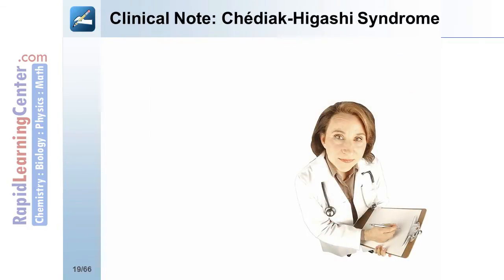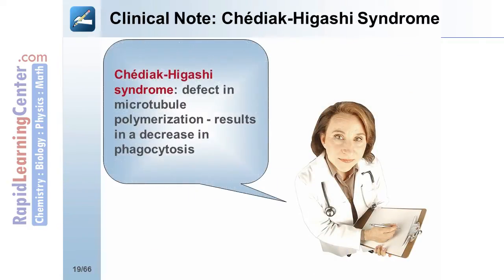On a clinical note, Chediak-Higashi syndrome arises from a defect in microtubule polymerization and results in a decrease in phagocytosis.